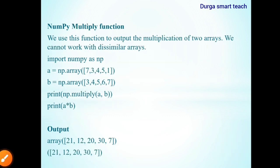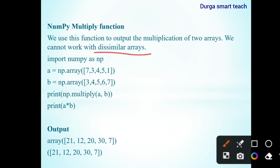The next one is multiply, which is used to multiply two arrays. We cannot work with dissimilar arrays. Array A contains 7, 3, 4, 5, 1 and array B contains 3, 4, 5, 6, 7. You can use np.multiply(A, B), or you can use the multiplication operator A times B. In both cases we get the same type of output. For example: 7 times 3 is 21, 3 times 4 is 12, 4 times 5 is 20, 5 times 6 is 30, 1 times 7 is 7.